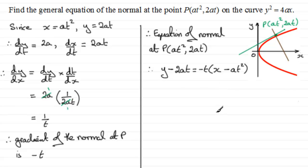So essentially that's it, but you could go on and expand this and tidy it up. If you did do that, you're going to get y minus 2at equals minus tx plus at cubed. And if we wanted to rearrange this with the x term first, we've got tx, and then we've got the y term next, plus y. And then if we say subtract at cubed from both sides, we've got minus 2at and minus at cubed equals zero. So there's a general form for the equation of this normal.